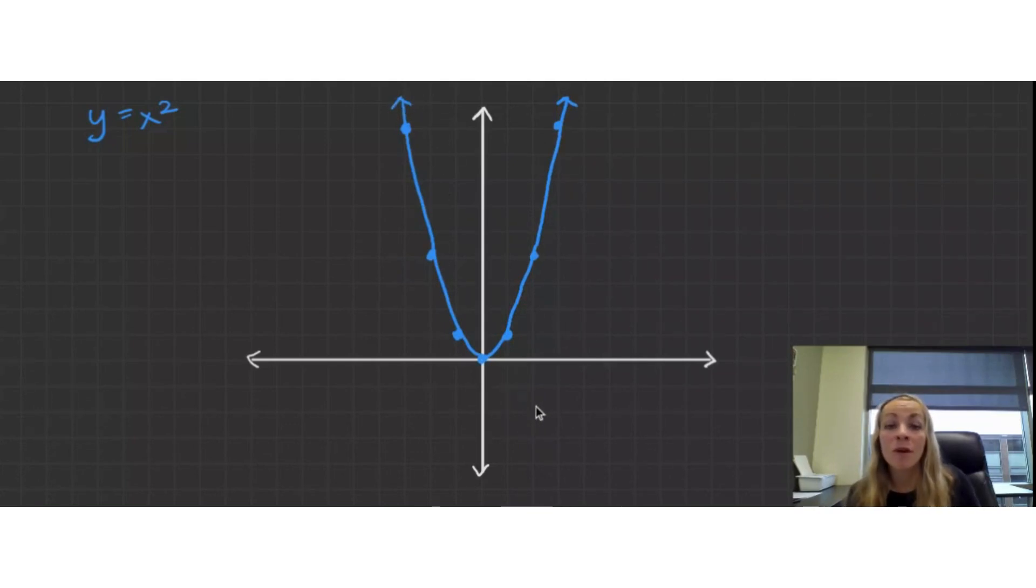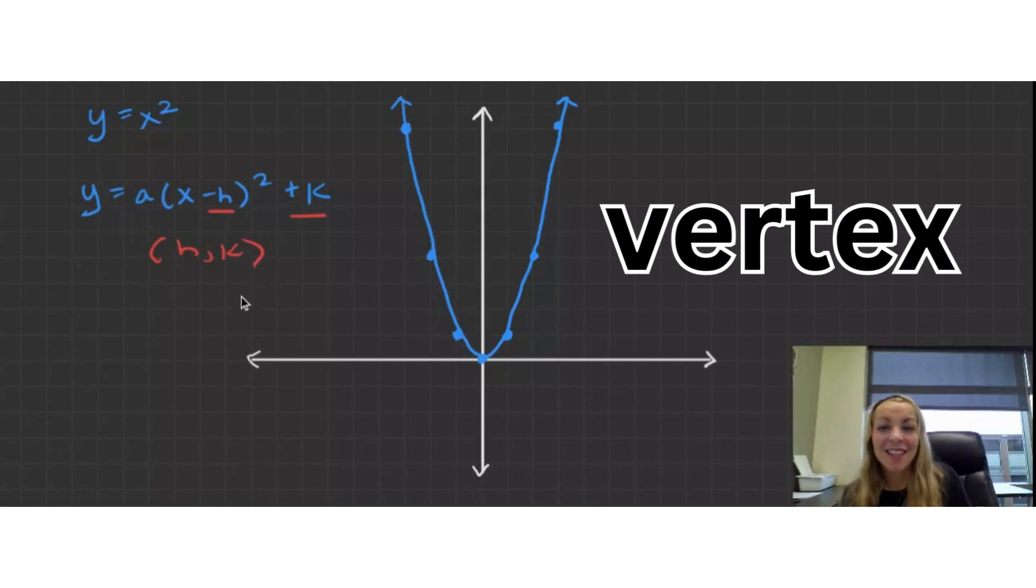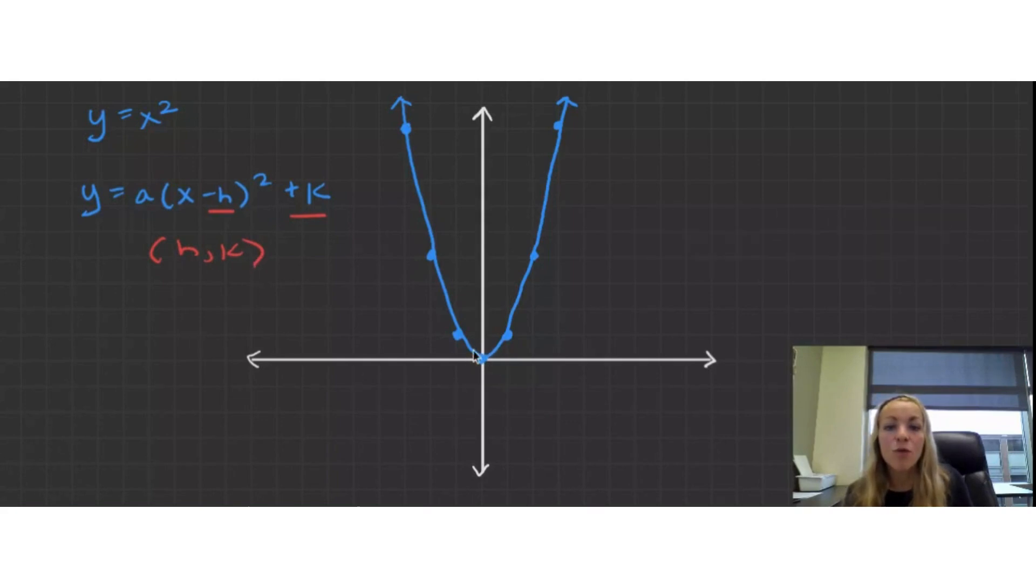And we just need to notice some important features. We have a vertex value here at (0, 0). In graphing form, we're going to move this around. So when we have y equals a times the quantity x minus h squared plus k, it's important to note that (h, k), that's our vertex. And so we're going to be moving this point around. Okay? So let's go and try some other examples.